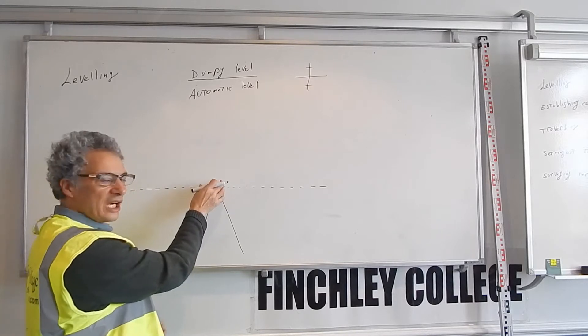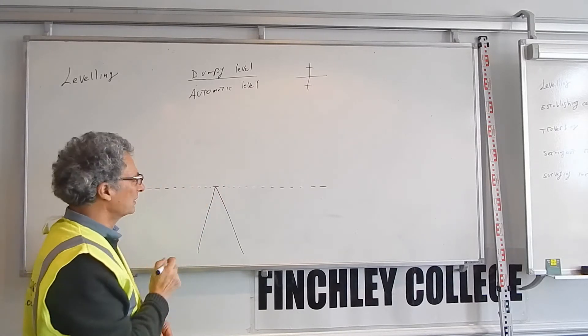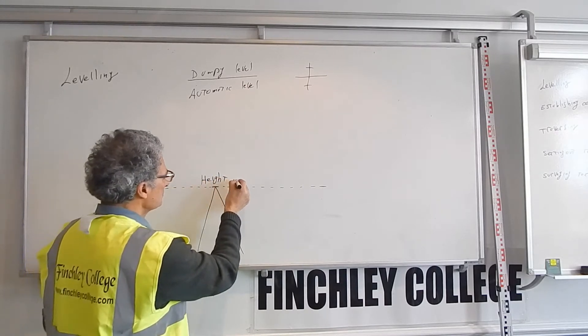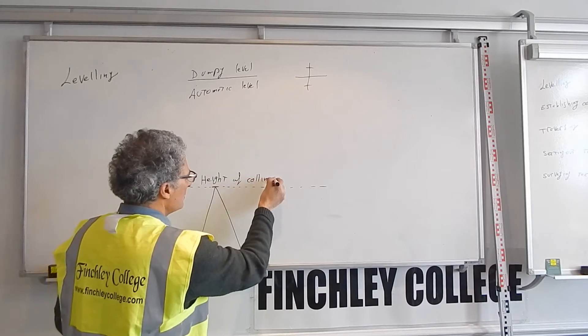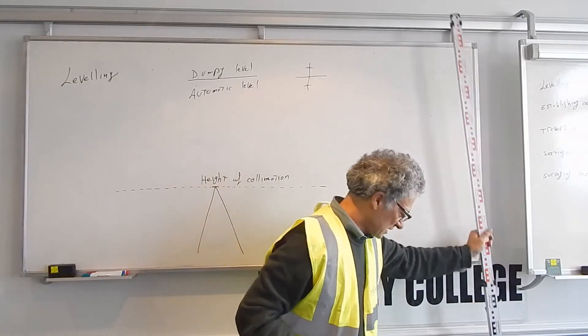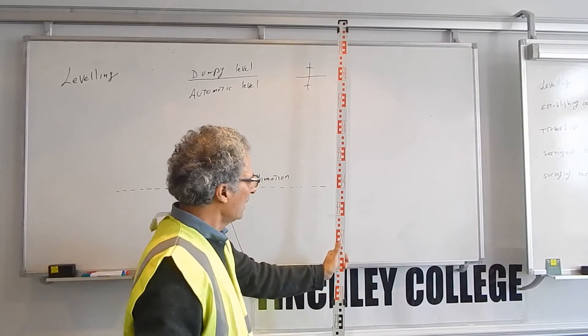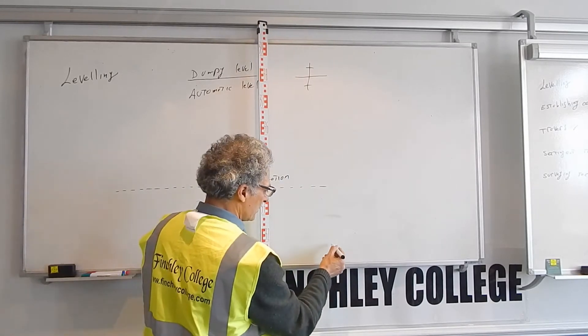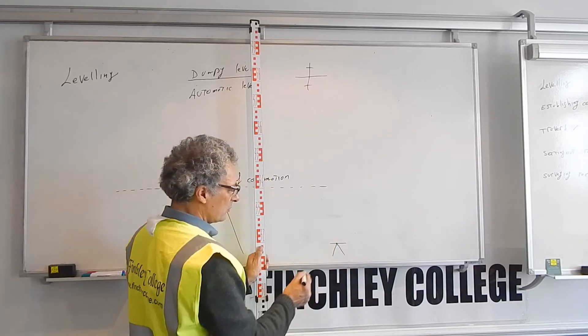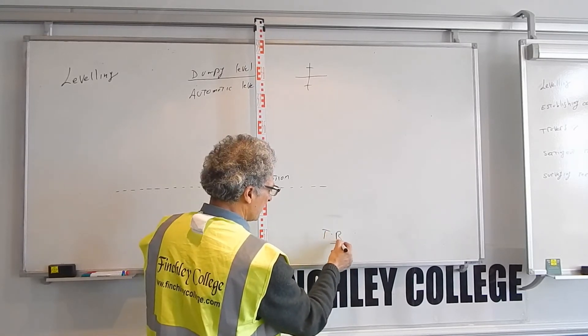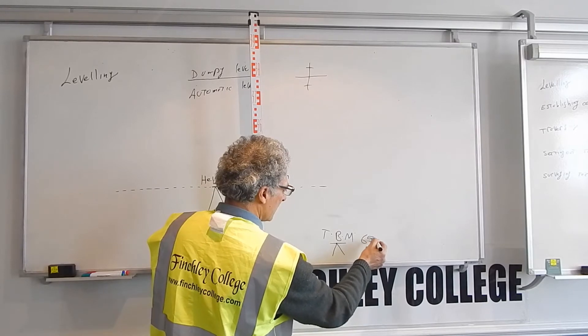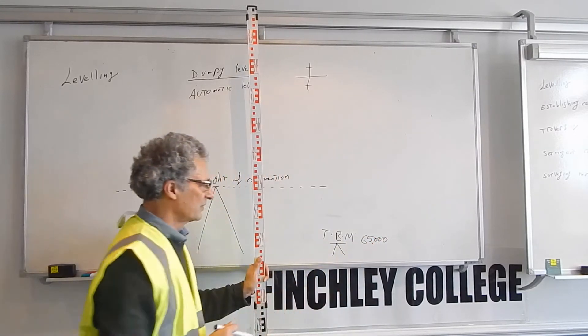We need to know the height of the instrument for it to do anything meaningful. The height of collimation is obtained by holding a staff on a benchmark, a temporary benchmark or TBM. For example, a point on the floor or mark on the wall with a value of 65 meters or 65,000.